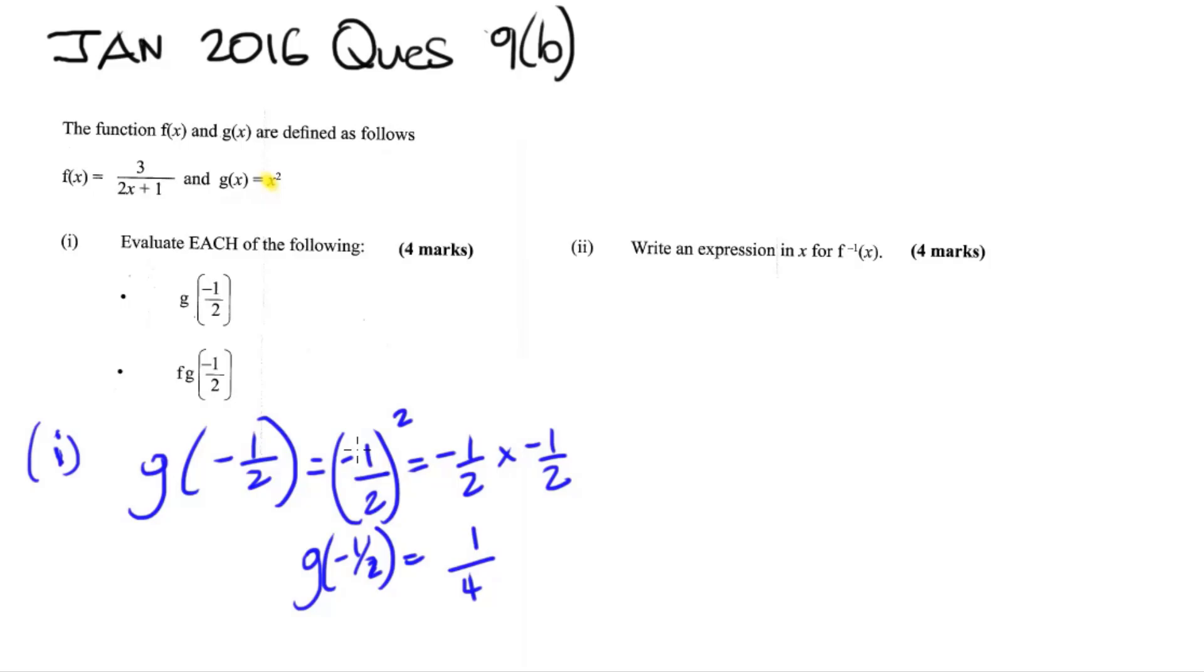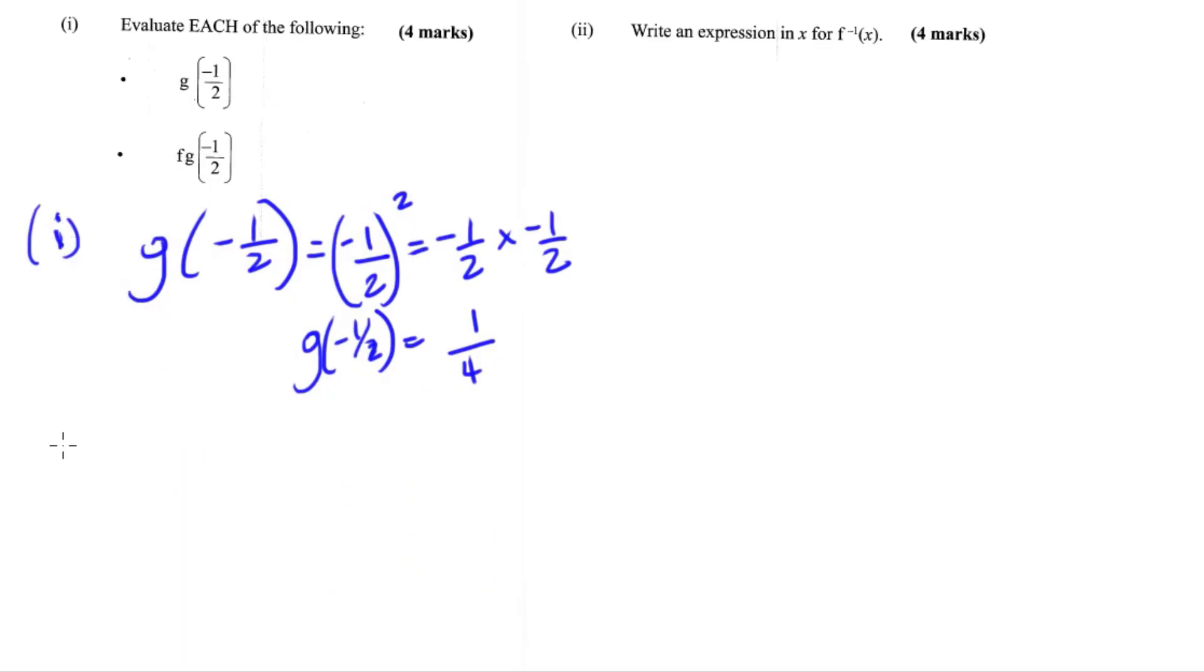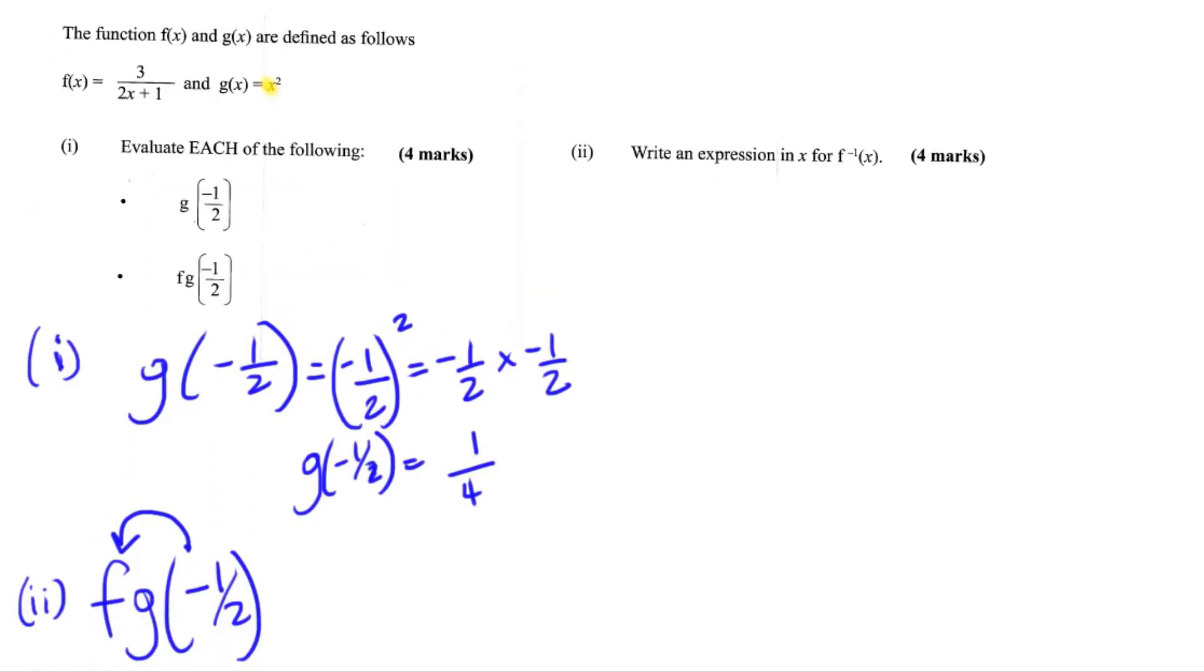Now let's go down to the second part where we're supposed to find fg of negative 1 half. Now, if you notice, this is a composite function. And that means we are putting one function into the other. So here we are going to be putting g of negative 1 half into f. Let me just go back up. So we know that f is 3 over 2x plus 1. Now, whereas with other composite functions, if we had an x here, that means we have to put the function into the other in terms of x. But no, we already know what g of negative 1 half is, right? Because remember, we just figured out that g of negative 1 half is a quarter.